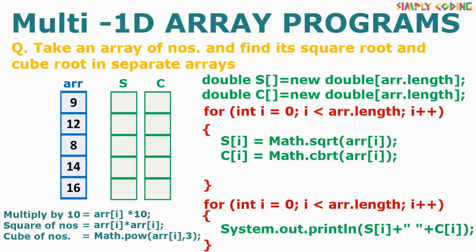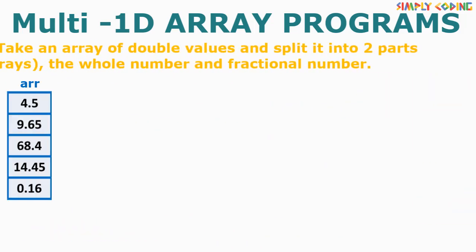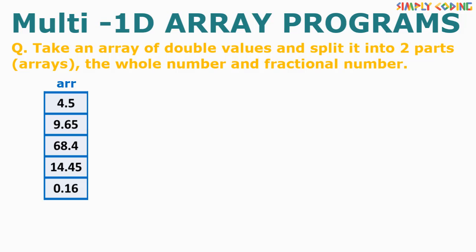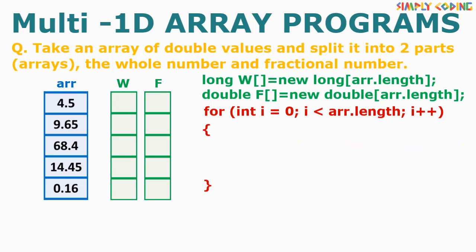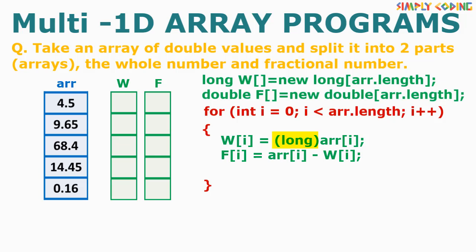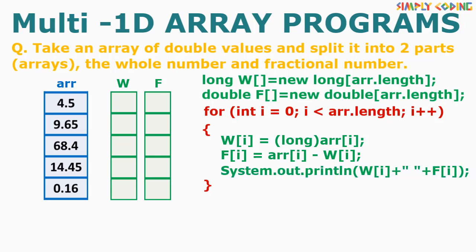The next program is to take an array of double values and split and store the whole number in one array and the fractional part in another. Array 'arr' has double values; we declare two arrays — one long and one double — to store the whole and fractional parts. Inside the traversal loop, we typecast the number to long to get the whole value, then subtract it from the original to get the fractional part. We place the print statement inside the traversal loop as well.